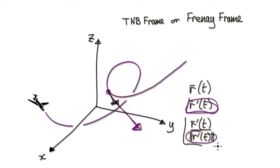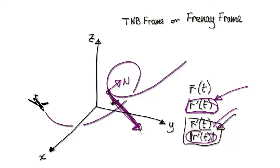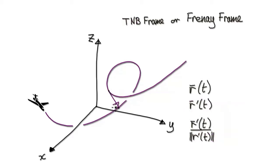If you differentiate the unit tangent vector, it will give you your normal vector. But if you try to differentiate the tangent vector directly, it won't work — it must be of length 1. Differentiating the unit tangent gives you the normal vector, and the tangent and normal vectors are at 90 degrees with each other.